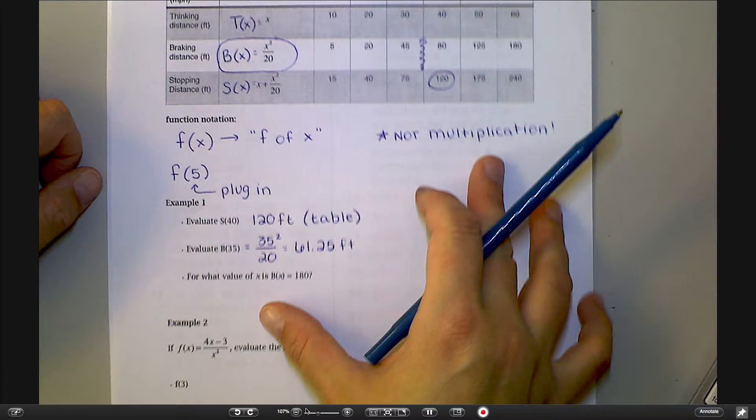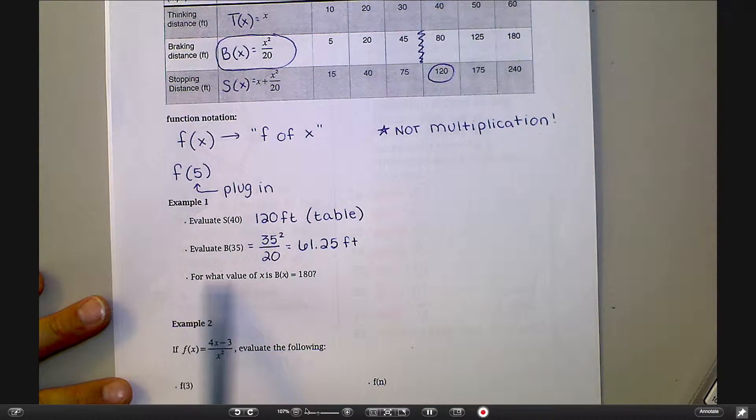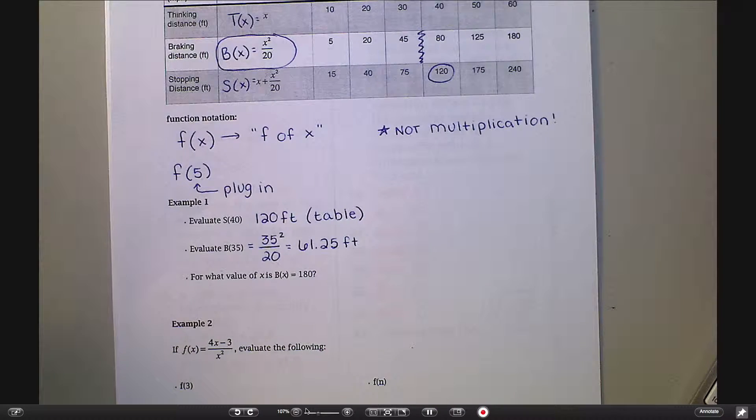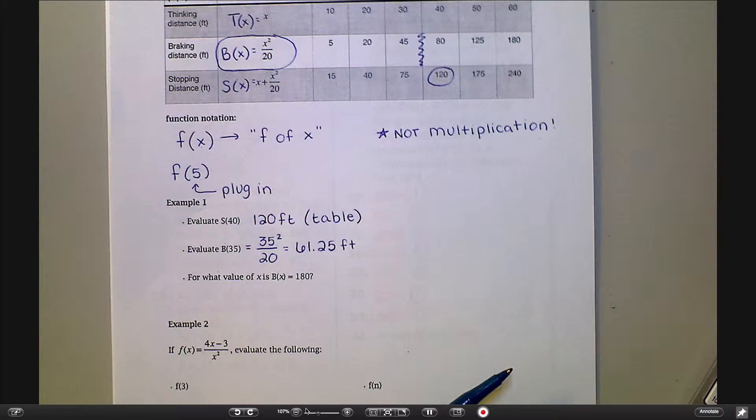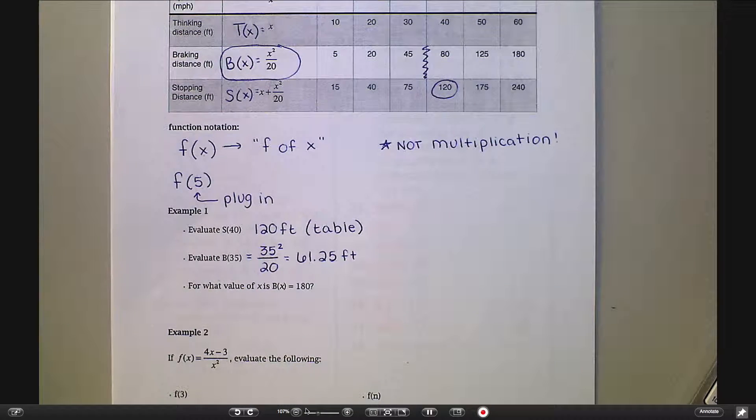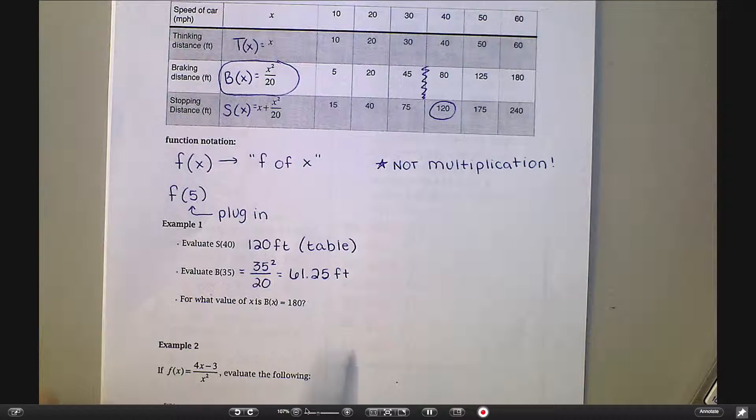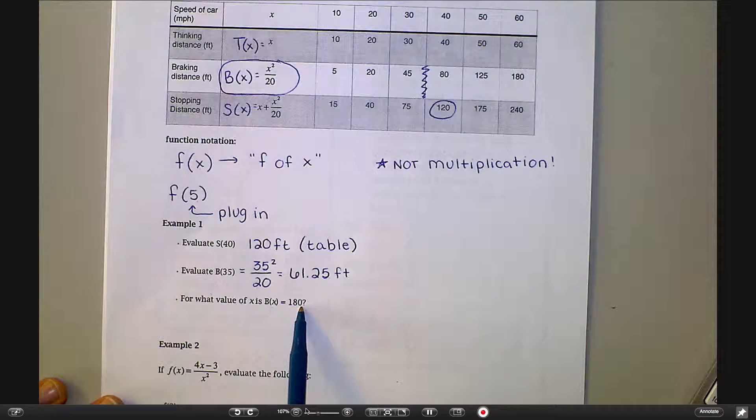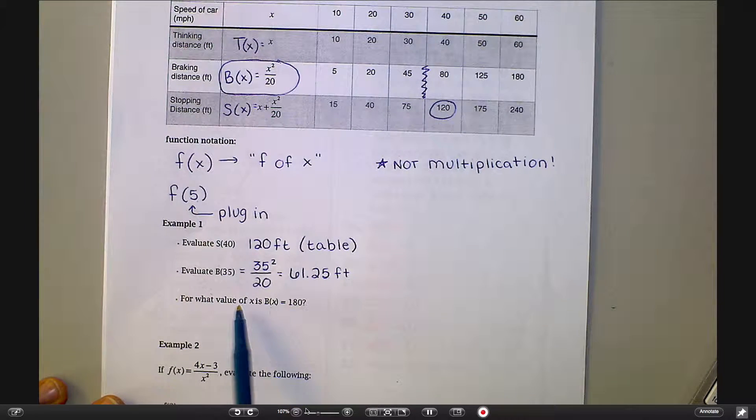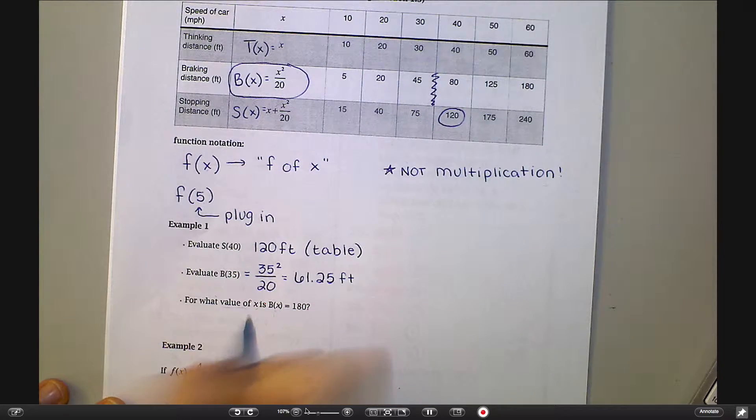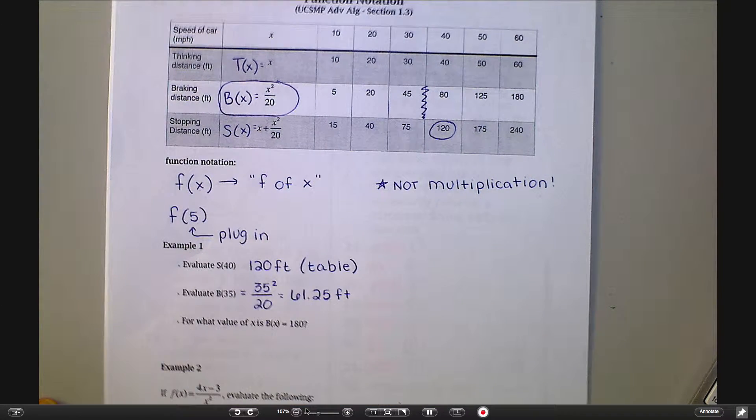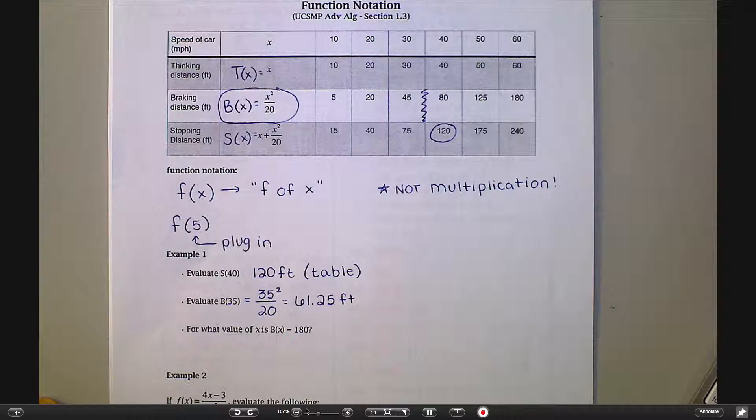Can anyone tell me what this third question is asking: for what value of x is b of x equal to 180? Perfect. So I want to know I want my braking distance to be equal to 180 and I want to know the value of x which is talking about the speed. Hunter, how'd you get that?